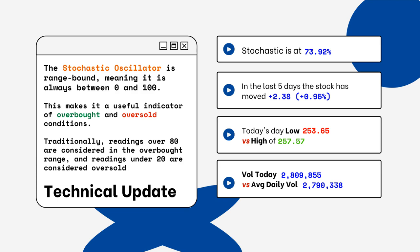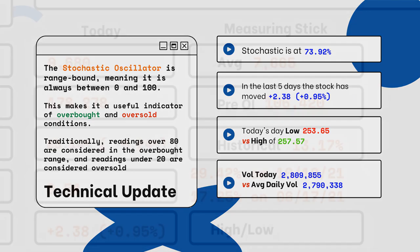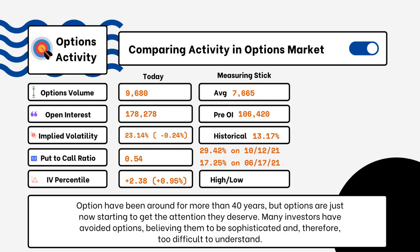We've also provided today's volume of shares traded and also the average daily volume. You want to see how much volume is being traded and whether it is above or below the average daily volume level — this tells you how relevant the move is from the stock today.